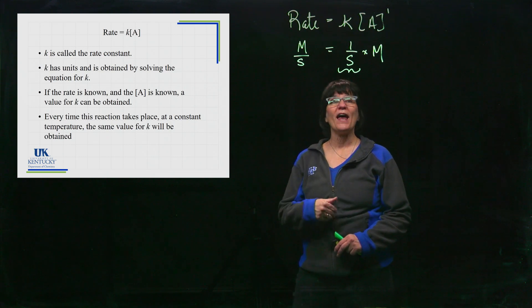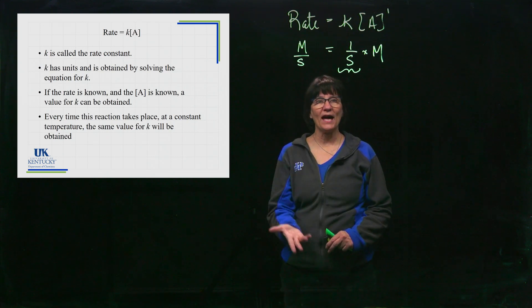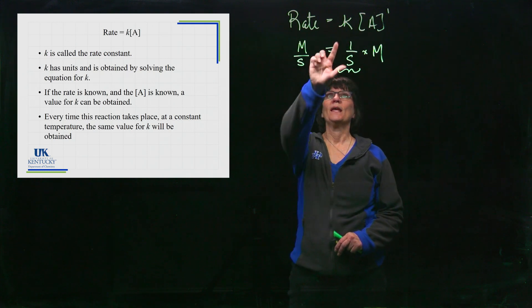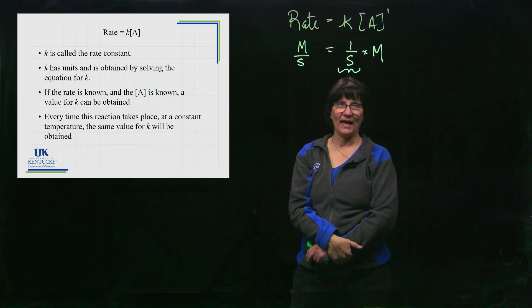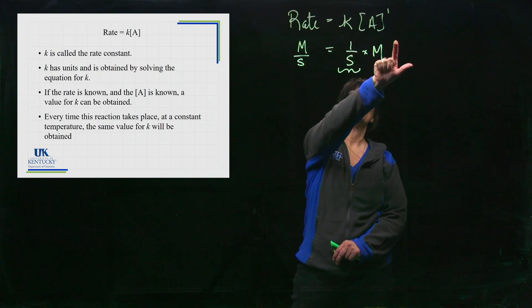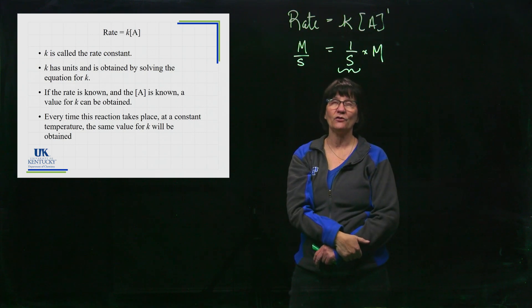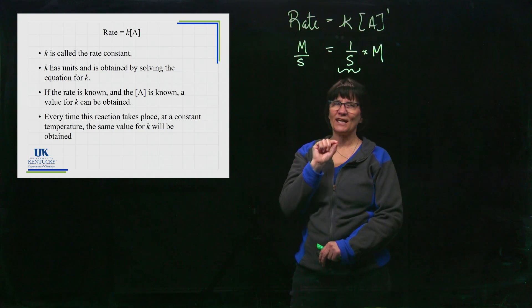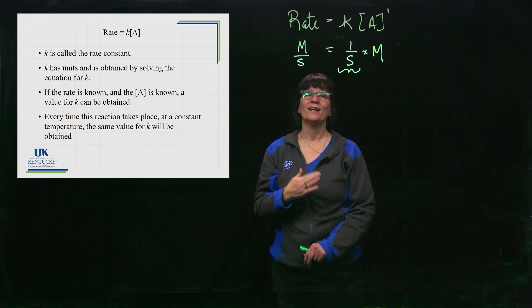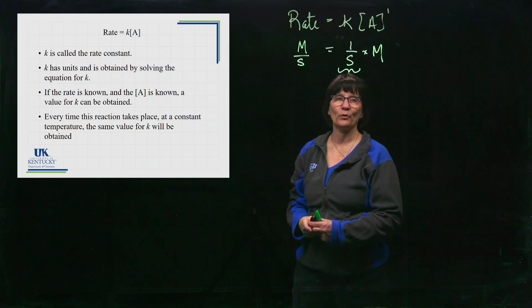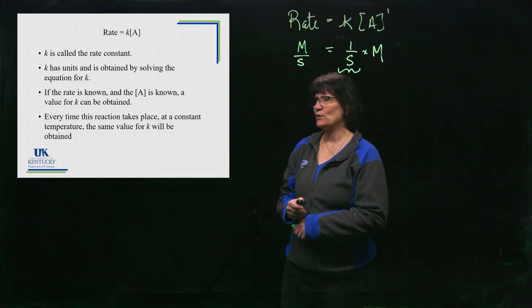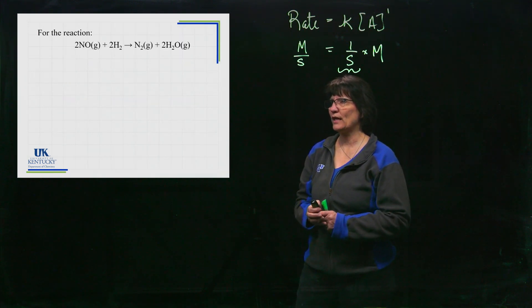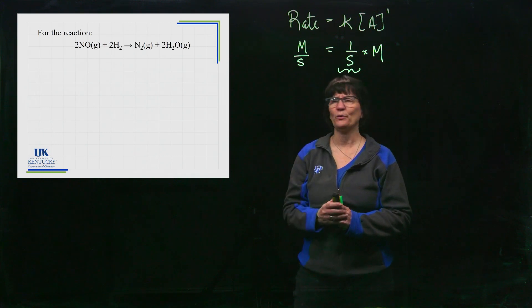Every time the reaction takes place at a given temperature, it will always have that value of k. So the rate law is true every time the reaction takes place, and the value of k is constant at a certain temperature — because temperature will affect the rate of a reaction, as we'll see in these lessons.